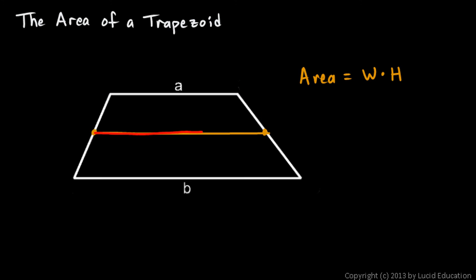The width that we use for the rectangle in that case is the average of length A and B. That's how we get a number to put in there for the width. We can say that the area of the trapezoid is equal to the average of the bases.